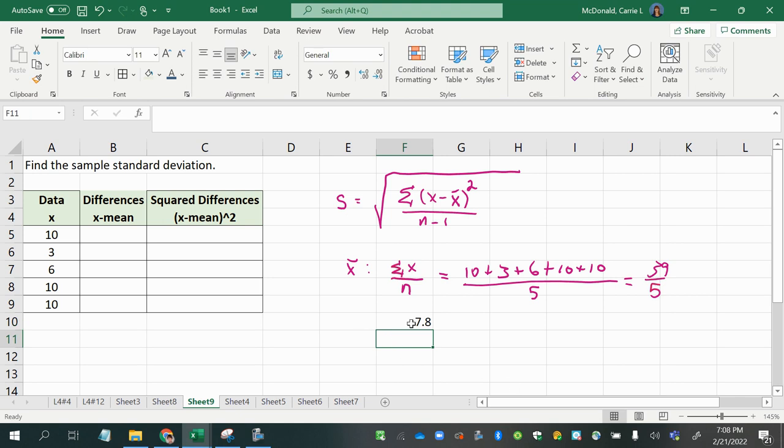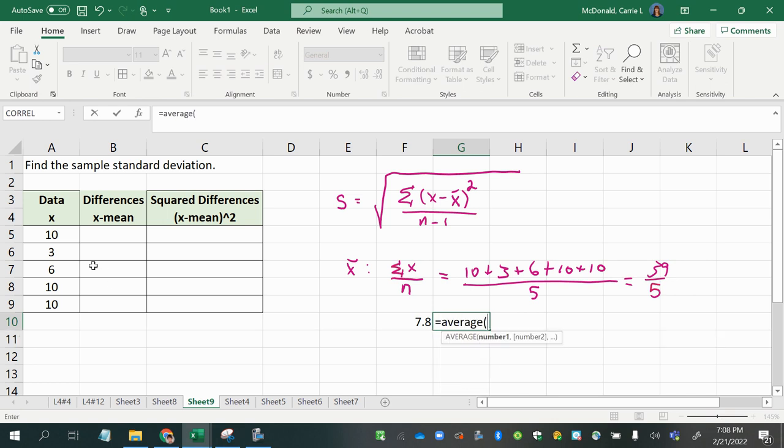Now you can also use the average function in Excel to find the mean by just typing in average in a parenthesis and then selecting your data and closing the parenthesis and press enter. Another way of doing this is to start to type in average, and then you'll see that it starts to be recommended here, and I can double-click that and select my data.